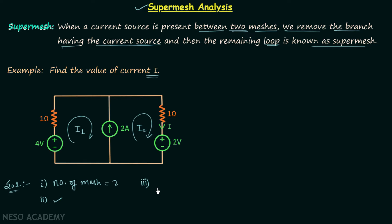Now in step number three we will obtain the mesh equations. Let's try to obtain the mesh equation for mesh number one — we apply KVL in the first mesh. Starting from this point we have plus four, then minus I1 multiplied by one as the voltage drop, giving us minus I1. Then we encounter the current source and we don't know the voltage across it, so we cannot complete our KVL equation. The same problem arises while developing the KVL equation for mesh number two.